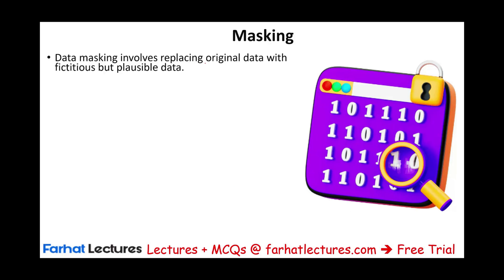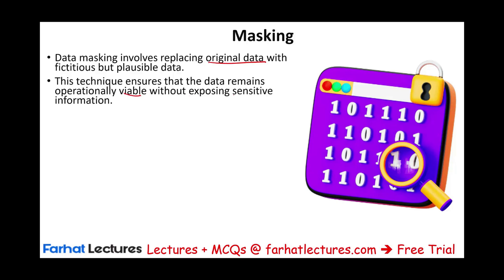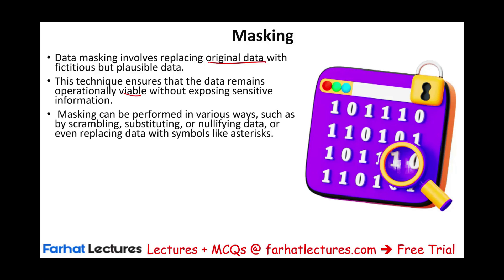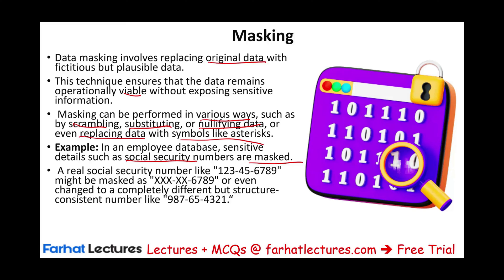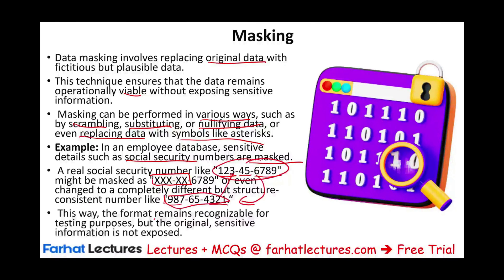Masking involves replacing original data with fictitious but plausible data. This technique ensures the data remains operationally viable without exposing sensitive information. It can be performed through scrambling, substituting, or nullifying the data, or even replacing data with symbols like asterisks. For example, in an employee database, sensitive data such as social security numbers are masked — a real SSN like 123456789 has the first five digits masked or changed to completely different but structurally consistent numbers. The format remains recognizable as a social security number for testing purposes, but the original sensitive information is not exposed.